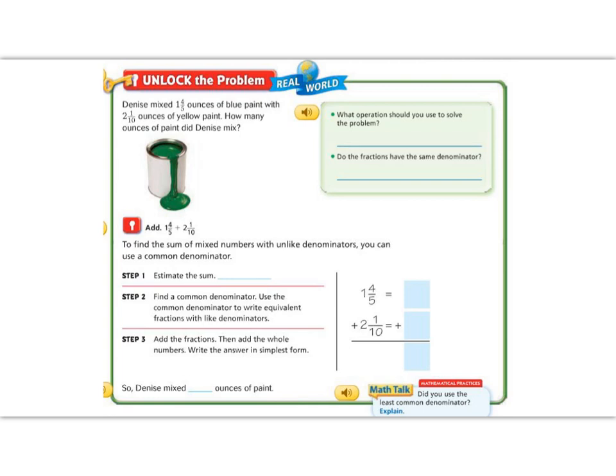Let's look to the green box to help us find information in our problem. It says, what operation are we going to solve? Well, if we have some blue and some yellow, we want to know how much the mix was. So that means that we are going to add.